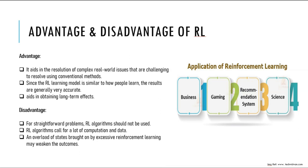Now let's understand the applications of reinforcement learning. The first field is robotics, where reinforcement learning is widely used for controlling robots to perform tasks such as grasping objects, navigating, and manipulation. Boston Dynamics is a great example — they train different types of robots for different purposes. Other robotics examples include autonomous cars, drone navigation, and industrial automation.